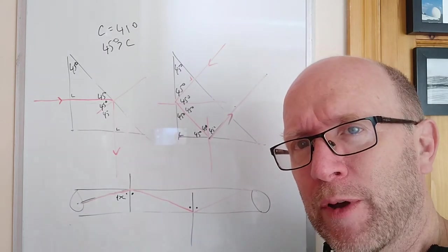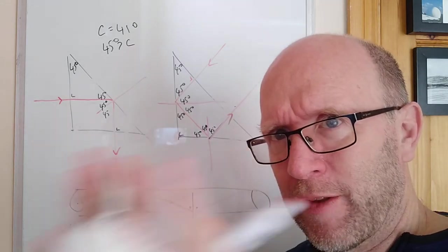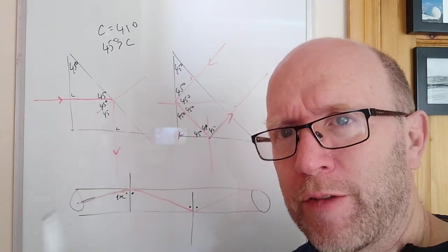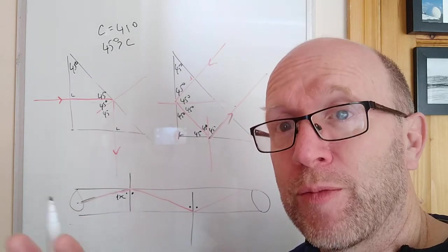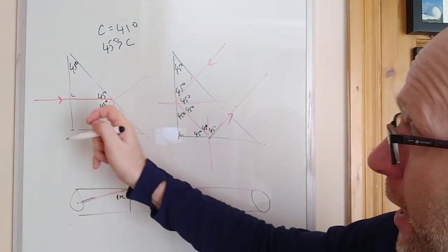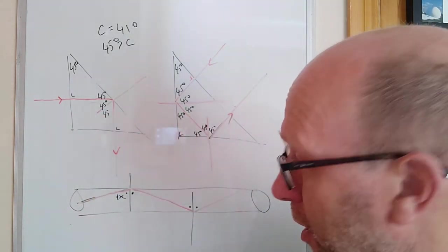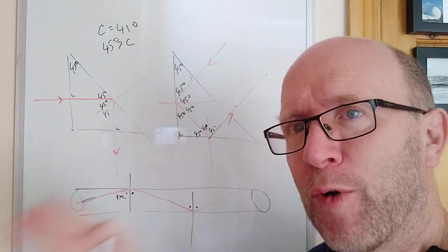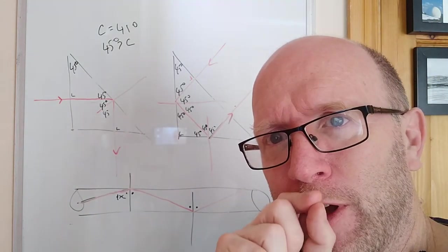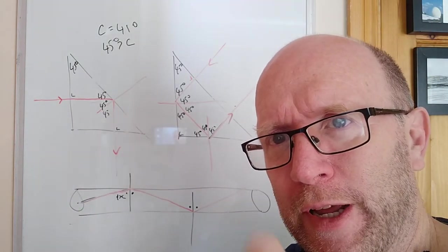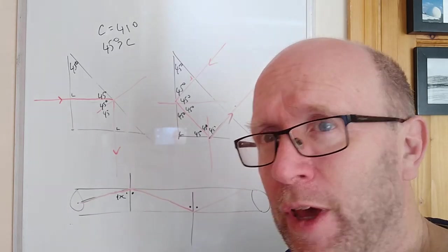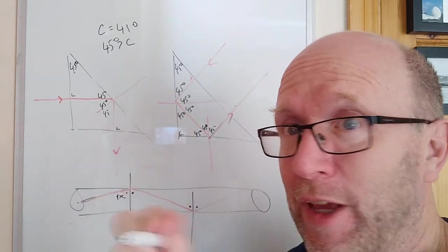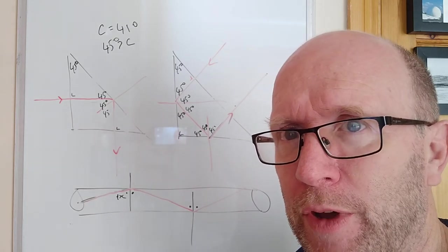To summarize: you need to know your Snell's Law diagram and apply it to lenses and prisms, handle the special cases of the two prisms and the optical fiber, and understand how critical angle and total internal reflection operate. The only way to revise this is with a piece of paper, sketching and talking through it.